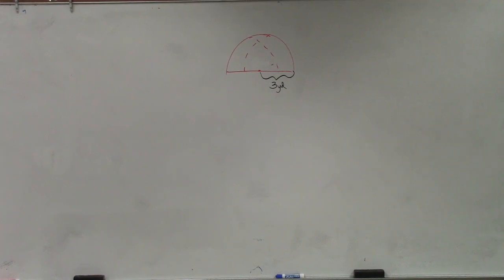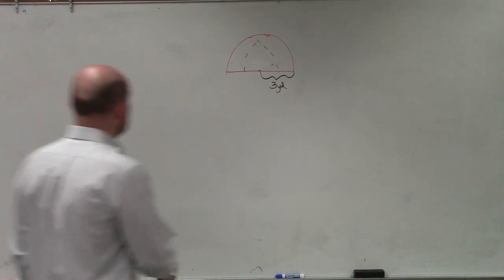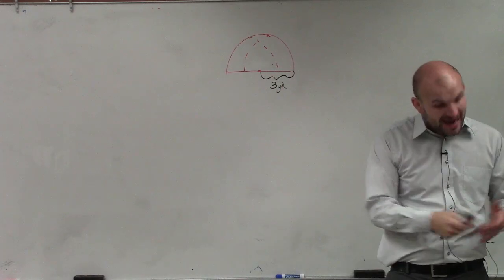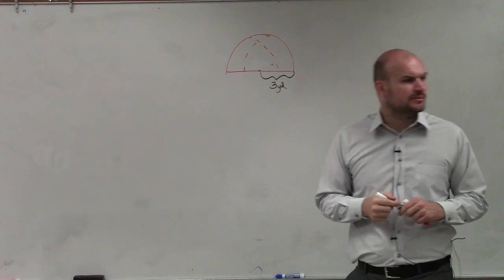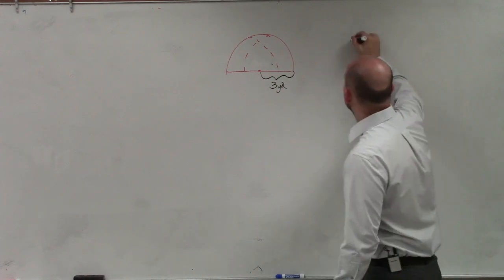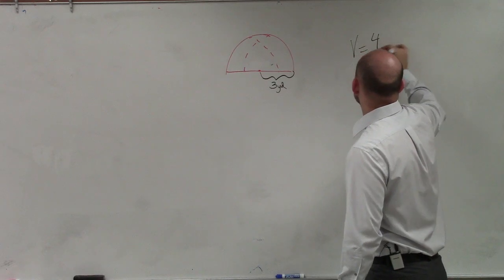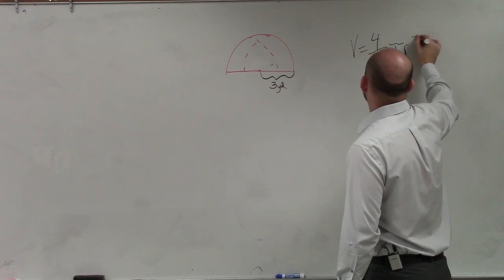All right, last example. In this example, ladies and gentlemen, we need to find the volume. The formula for the volume is equal to 4 thirds pi times r cubed.